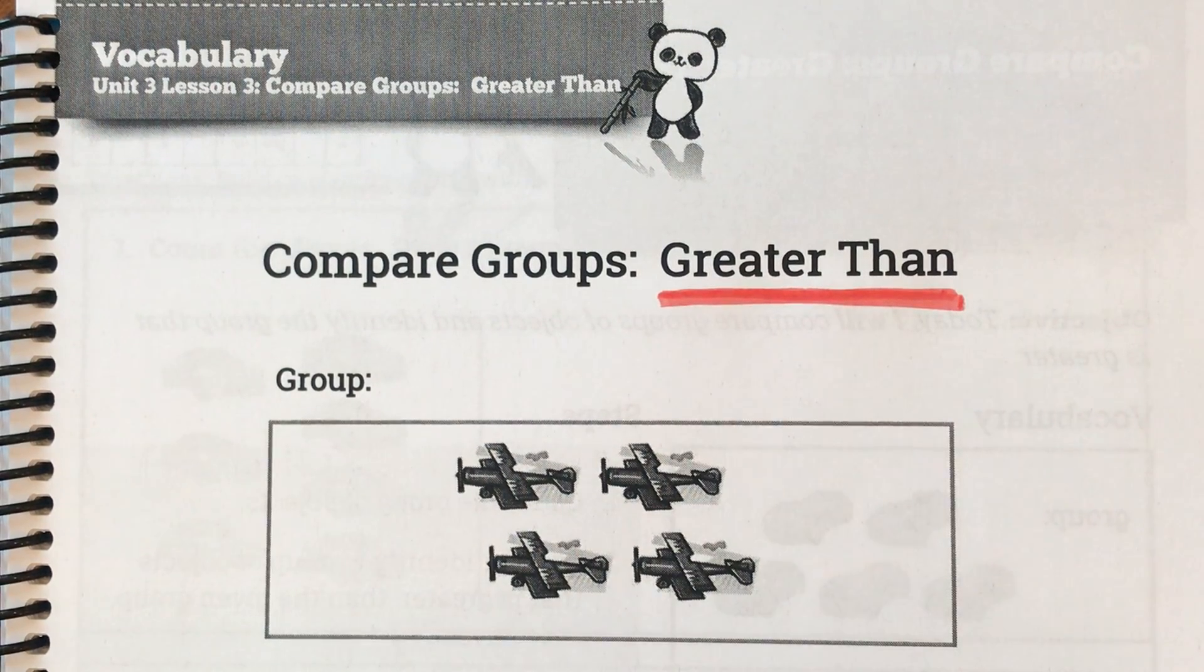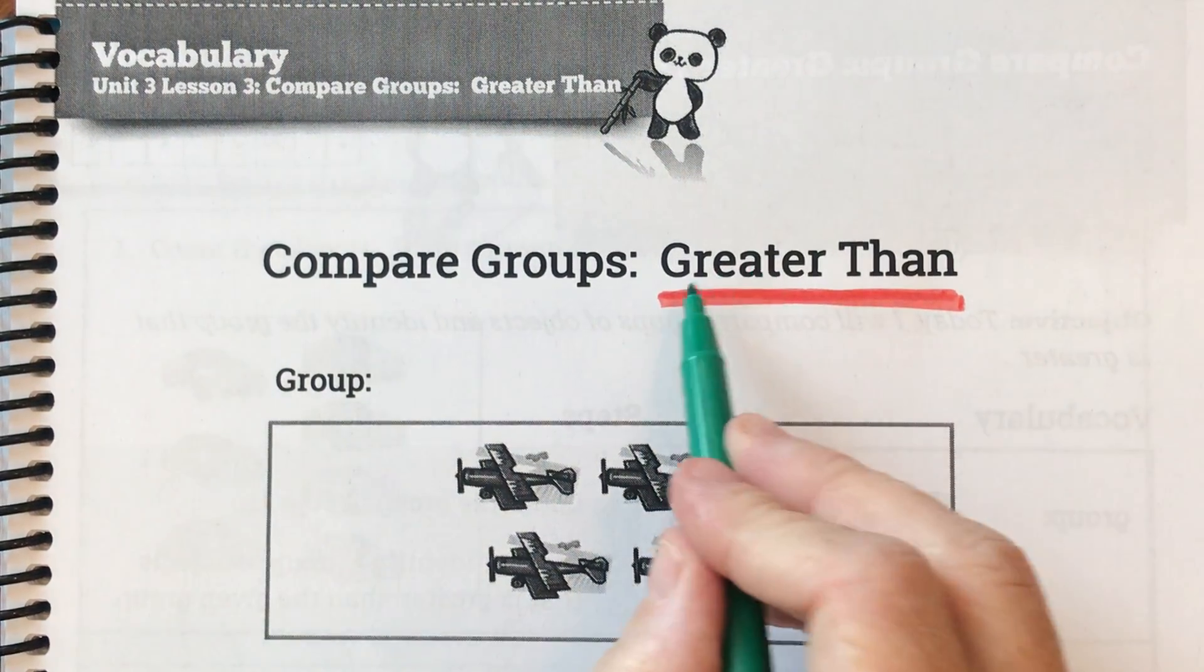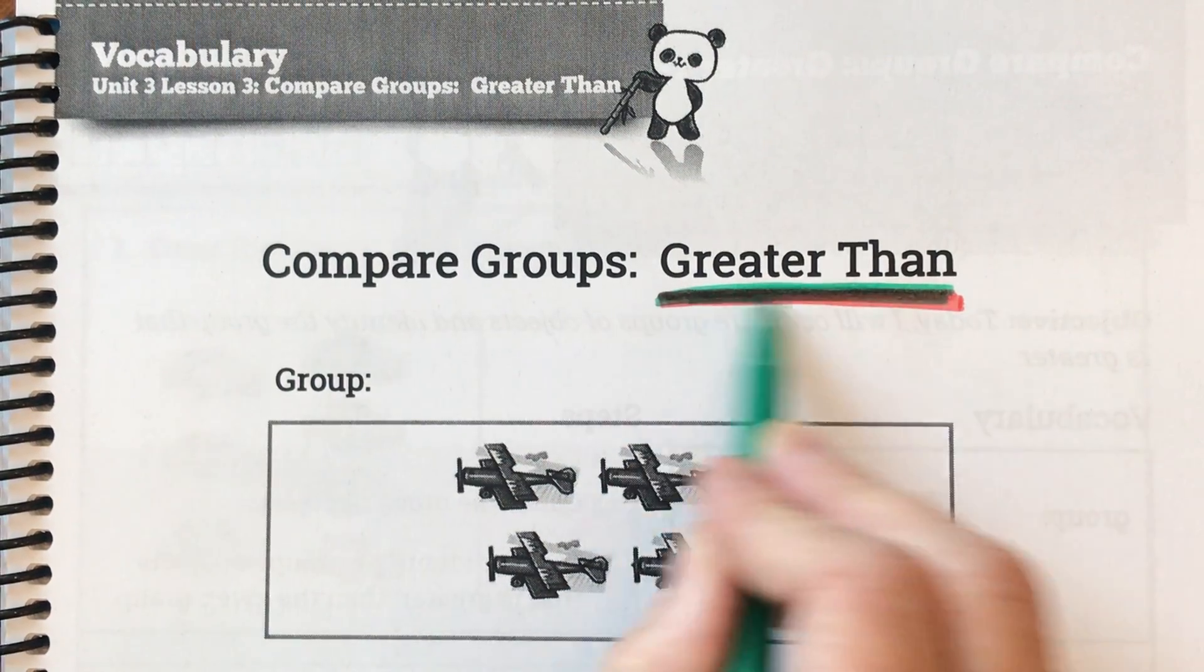Oh, I'm sorry, friends. I should be using a green marker. We're going to do something called greater than, okay?